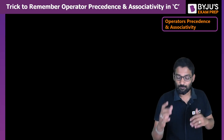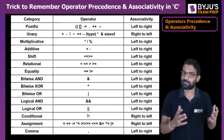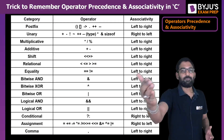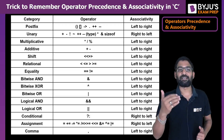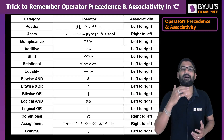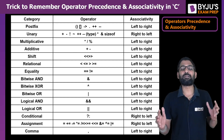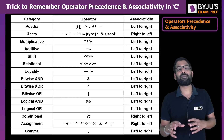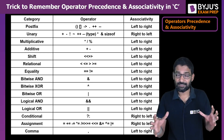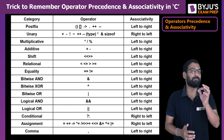Operator precedence and associativity is represented as a big table. As you can see, postfix has the first priority, then unary, then multiplicative, and so on, with the last priority given to comma. For a normal student, it would be very difficult to remember this big table, so I am giving one simple trick to remember it very easily.